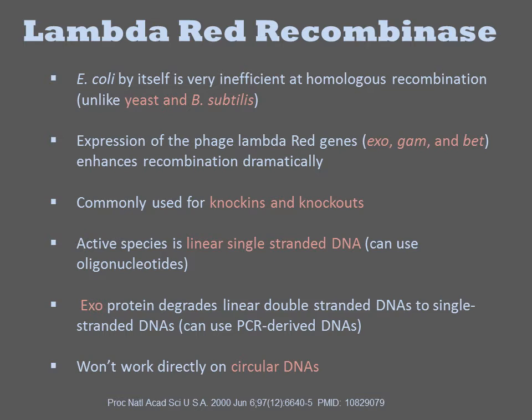Lambda red is in common use for producing knock-ins and knock-outs in prokaryotic genomes. Mechanistically, the recombinogenic species is a linear single-stranded DNA, such as oligonucleotides, that is introduced into the cell by transformation. Alternatively, linear double-stranded DNA can be provided, and the exo protein of lambda red will degrade it into single-stranded molecules that can undergo recombination.